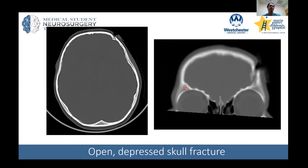Staying with the theme of trauma, this is an example of a skull fracture. We're looking at bone windows — we can see that the nice linear structure is interfered with in this area and it's depressed. This was a young boy, about five years old, who was skateboarding without a helmet and fell, striking his head.